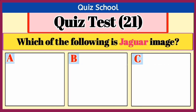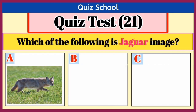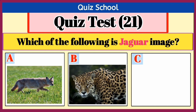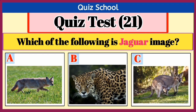Question number 11. Which of the following is the kangaroo image? Option A, Option B, or Option C. Right answer is Option B.